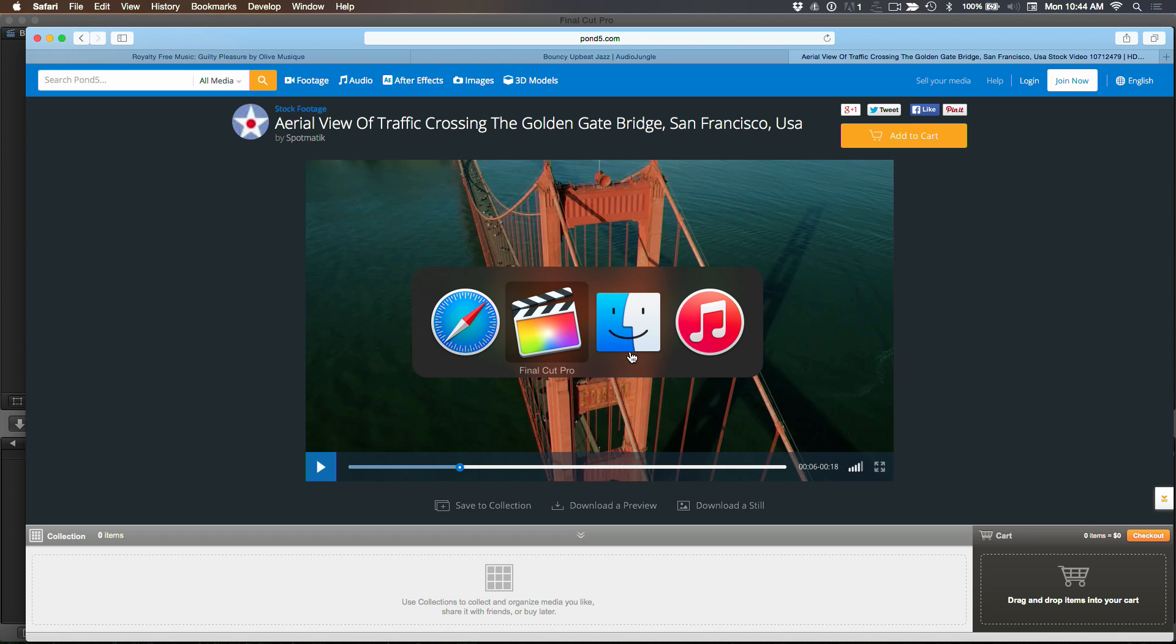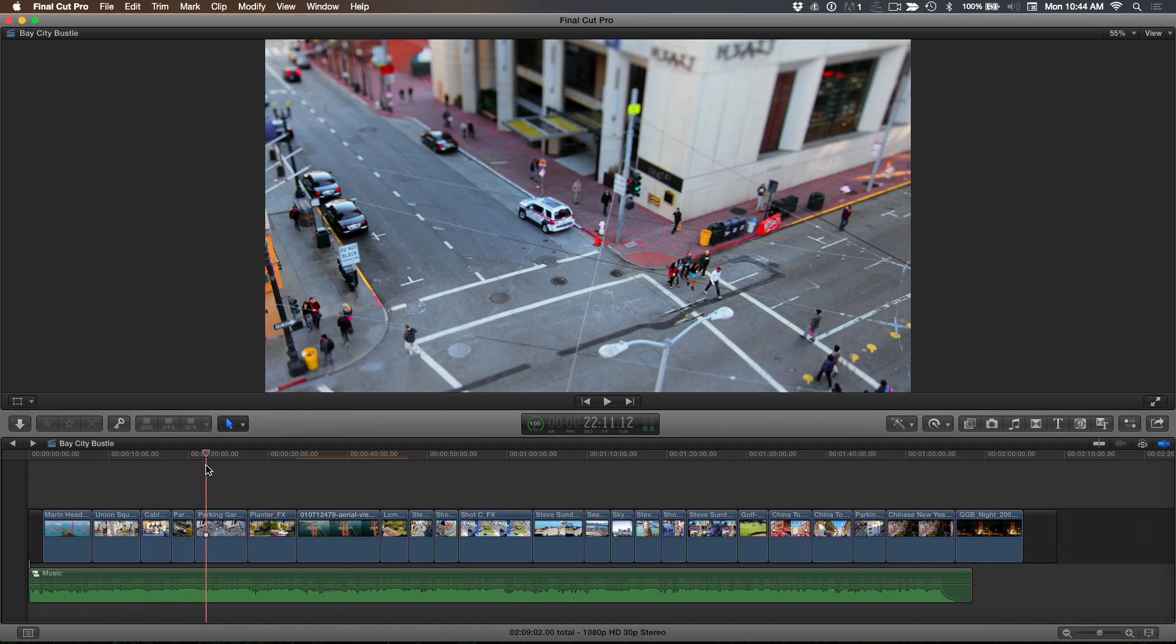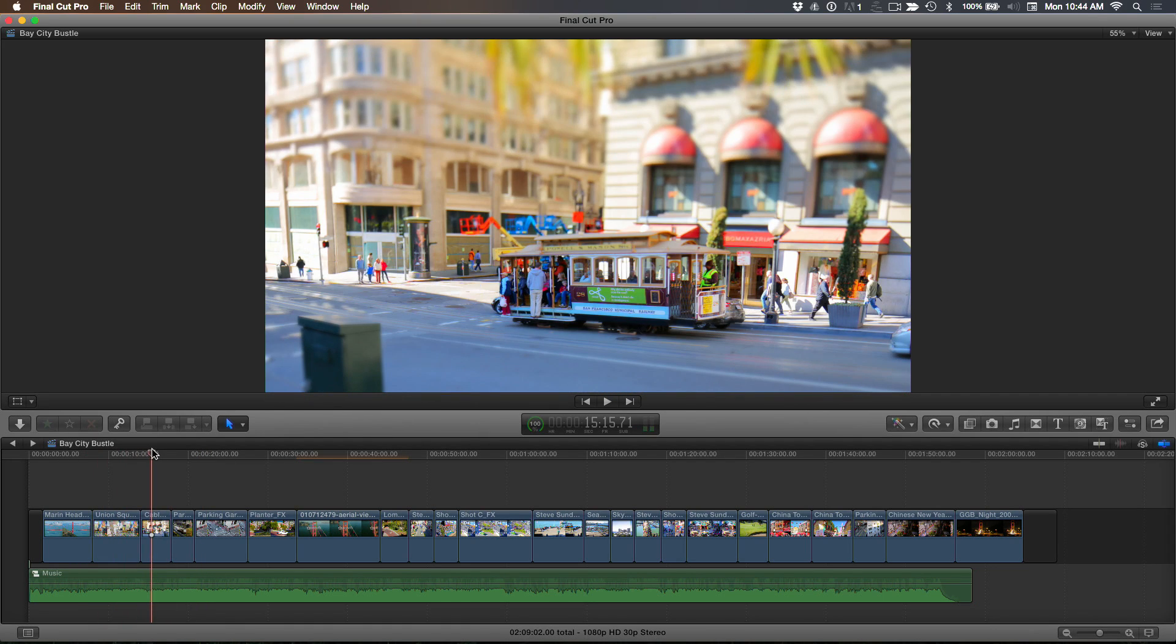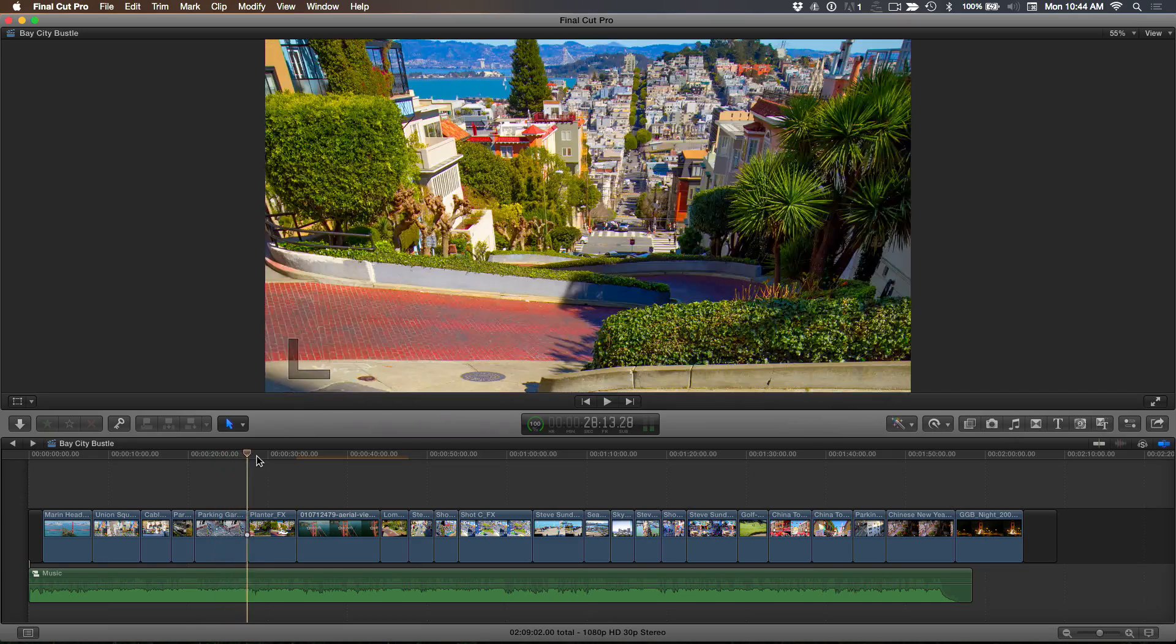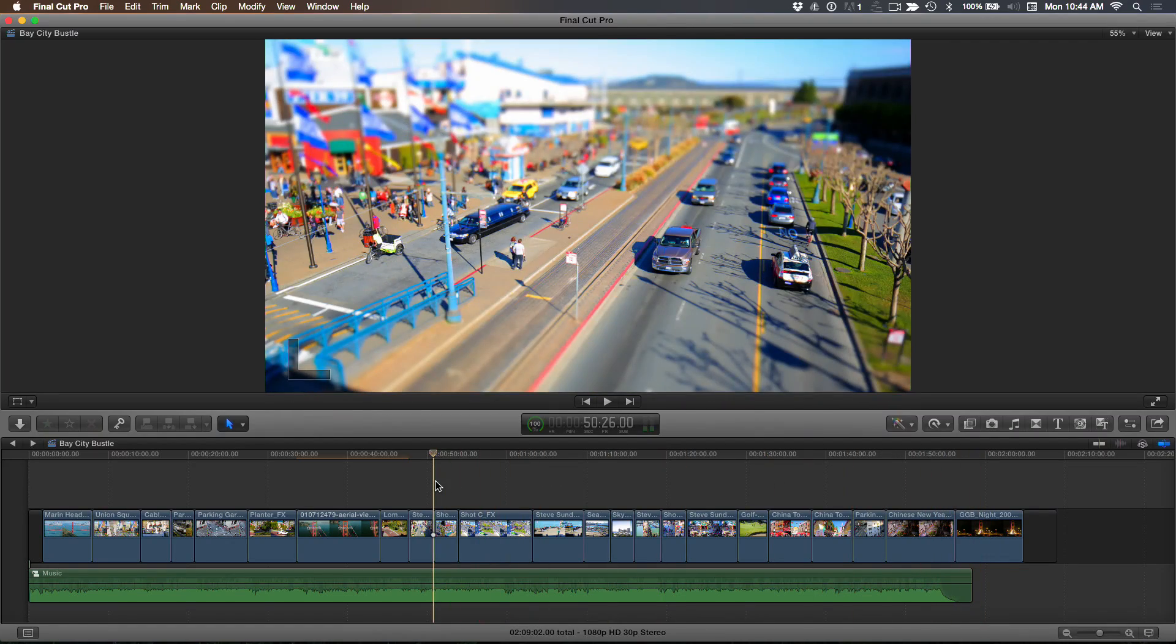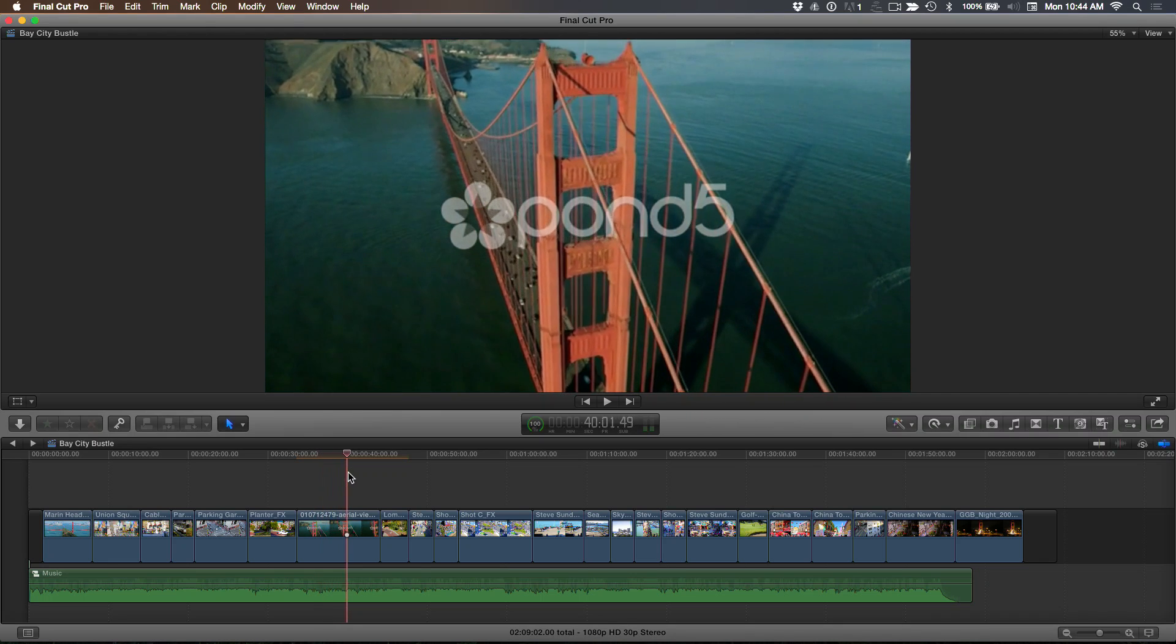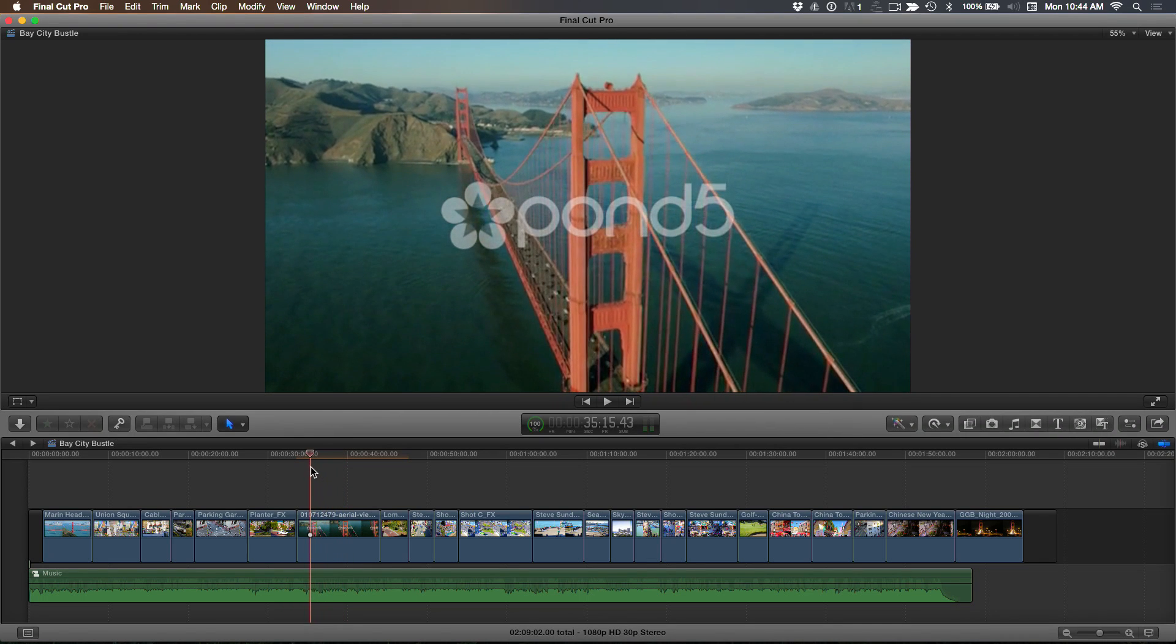So I'm going to go back to Final Cut and show you that I've got this time-lapse project. And let's say I was working on this for a client. I'm my own client because I did this. But let's say this is something for network or broadcast or what have you. And I have a lot of stuff from San Francisco here. I've got these Golden Gate Bridge shots. But I needed another Golden Gate Bridge shot. So I didn't want to go out and shoot it.